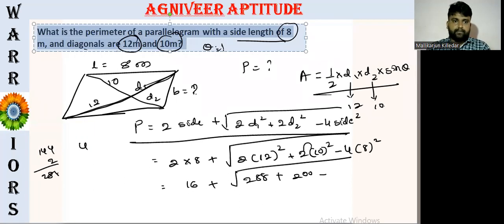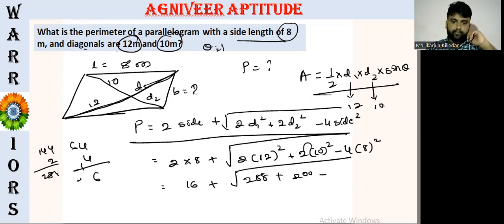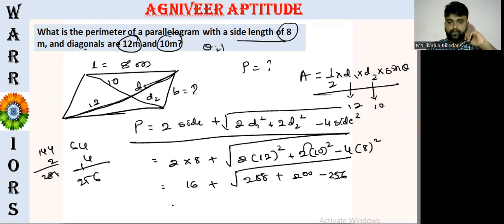So 8 squared is 64. 64 into 4 is... 45 minus 256.